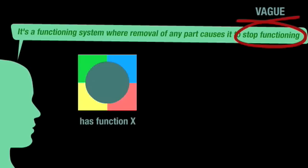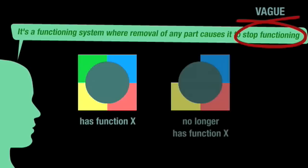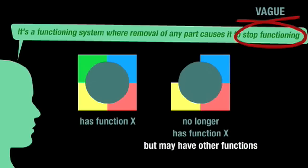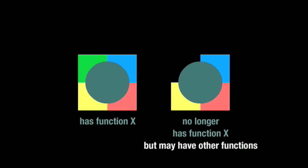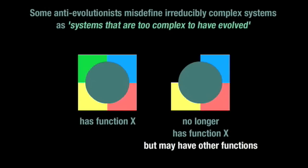As already mentioned, an irreducibly complex system is one which, when a part is removed, loses the specific function of that system, not one that stops functioning full stop. And, incidentally, it's also worth noting that some anti-evolutionists take the definition a step further, falsely asserting that irreducibly complex systems are those that are too complex to have evolved.